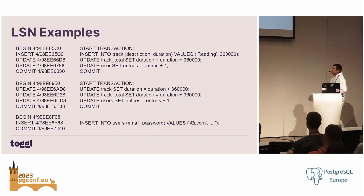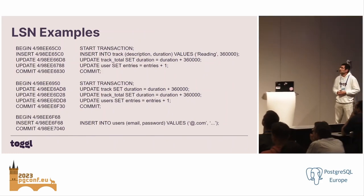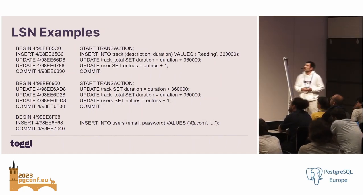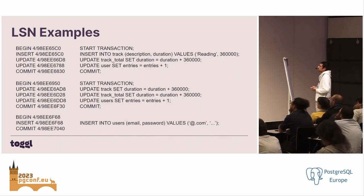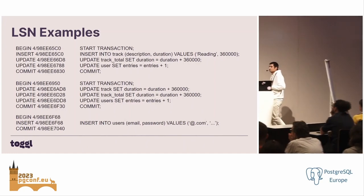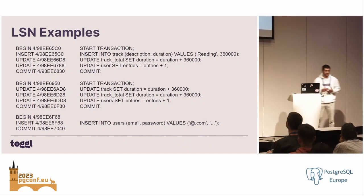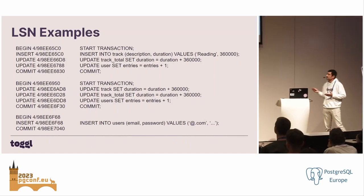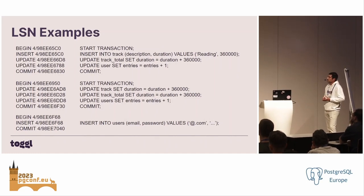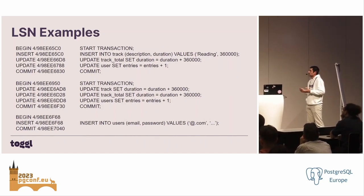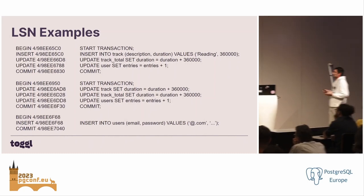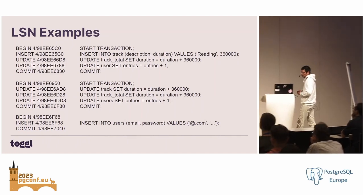Here are some examples of how those offsets look. In the first example, we have a transaction start, an insert, a couple of updates, and a commit — and by the way, that was the operation that would mostly run on our databases until a few months ago. The second example is almost the same thing with a few operation changes, and the third example shows how that looks with a single operation.